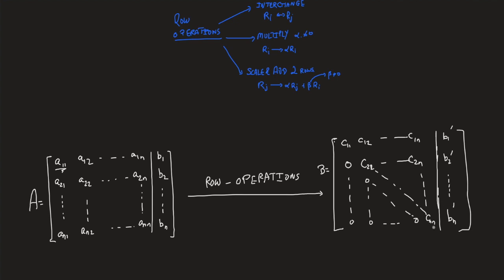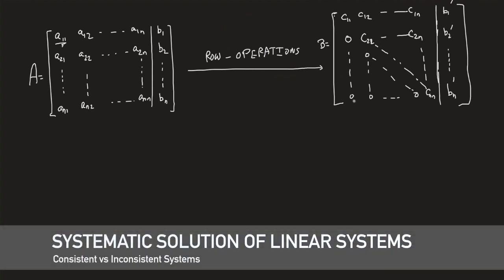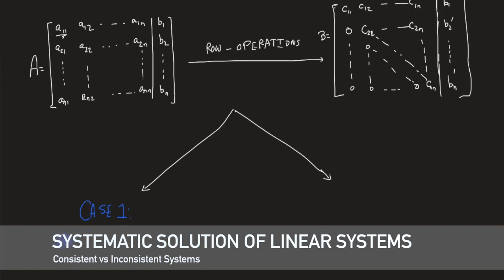We gave a simple example where, through row operations, we perfectly obtain the upper triangular form with no problem in solving using backward substitution. However, this is only one case — in this case you get a unique solution. There are other cases we'll be discussing in this lecture. While going from A to B, you get two main cases: case one, you get a consistent system, meaning only one unique solution.